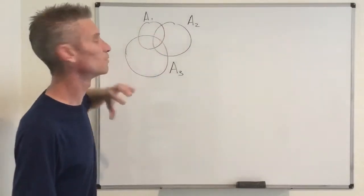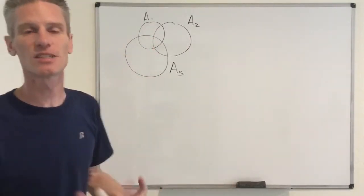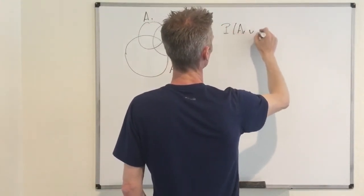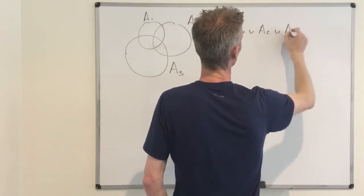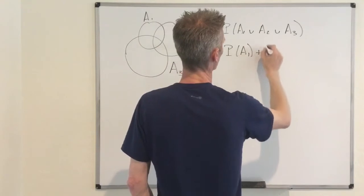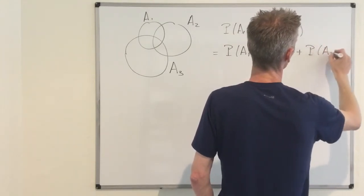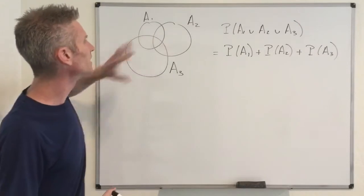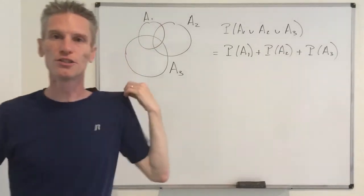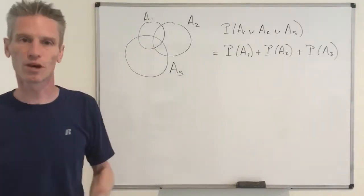Assuming those events were disjoint or mutually exclusive, then sigma-additivity of the probability measure tells you that the probability of the union equals the sum of the probabilities. So even though it's not correct in this case because of the overlaps, let's just run with this and see what's wrong. We have P(A1 ∪ A2 ∪ A3) = P(A1) + P(A2) + P(A3).